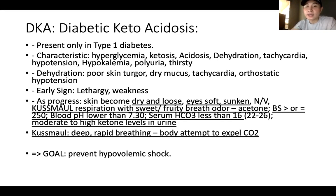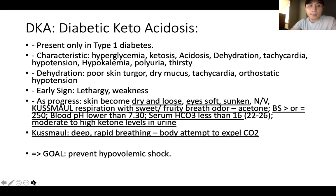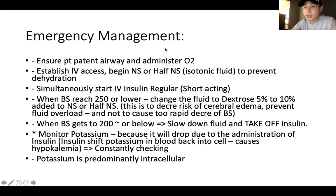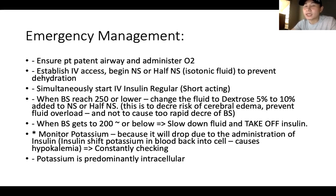The body breathes rapidly to expel carbon dioxide because it senses the blood is too acidic. Carbon dioxide is acidic, so by breathing rapidly the body expels it faster, making the blood slightly more alkaline. The goal of DKA management is to prevent hypovolemic shock — the state when the body is so dehydrated or there isn't enough blood volume circulating throughout the body.